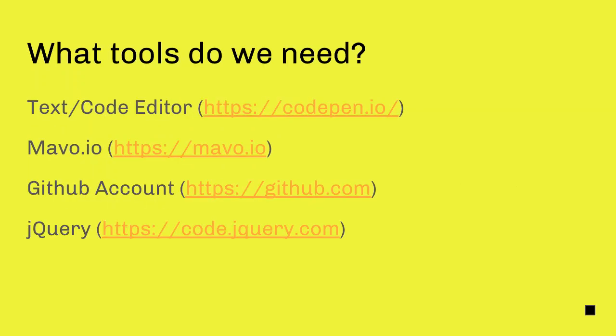Let's look at the tools we need — they're pretty basic. You just need a text or code editor; I'm going to be using CodePen and I'll give you a link for each episode. We also need Mavo, which you can find at mavo.io. You need a free GitHub account — that's going to hold our JSON file and make it accessible to the world. There are different ways to put Mavo on your own server or website using different coding technologies — it's very flexible.